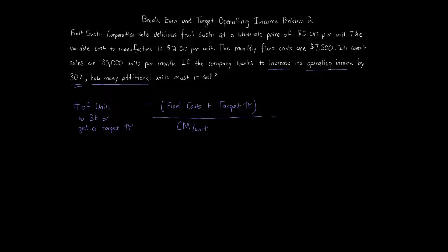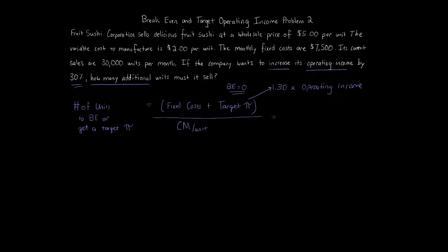If you're looking for a break-even question, the target profit will be equal to zero, but we're not doing break-even here — we're doing an increase in operating income by 30%. To get the target profit, which is the increase, that's 1.30 times operating income. We'll have to calculate that separately, then plug in these items. We're given the sale price of $5, the variable cost $2, the monthly fixed cost $7,500, the current sales of 30,000 units, and we're looking for the number of units required to get a target profit of 30% of operating income.